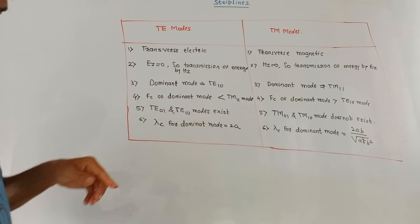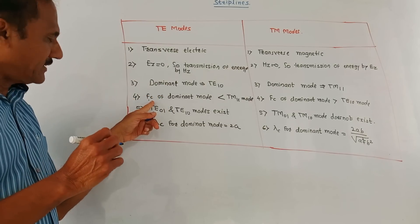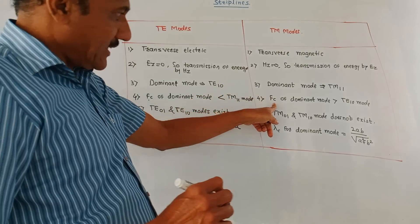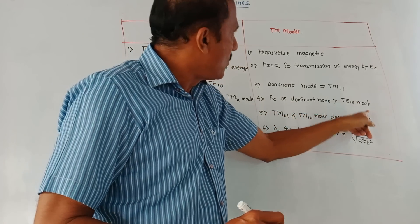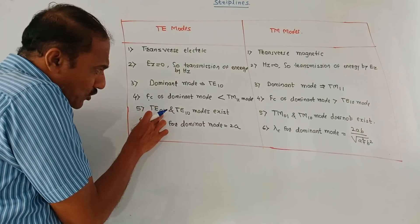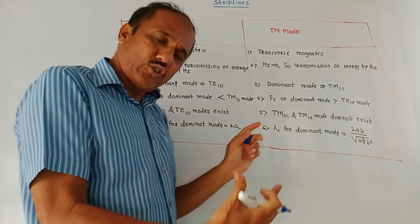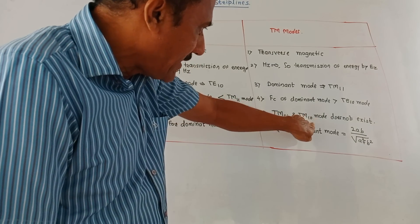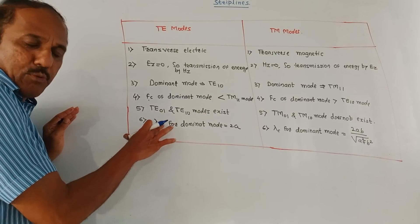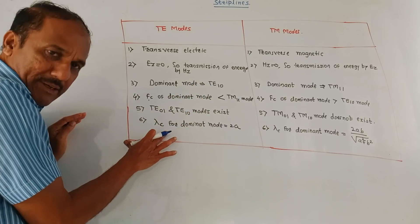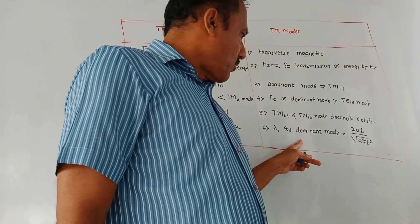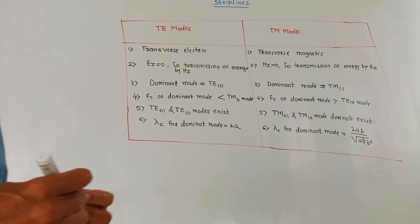Then dominant mode is TE10 and in this case dominant mode is TM11 mode. Then cutoff frequency, FC stands for cutoff frequency. Cutoff frequency of dominant mode is less than TM11 mode, whereas cutoff frequency of dominant mode is greater than TE10 mode for TM modes. Then important comparison: TE01 and TE10 modes exist, whereas in case of TM, TM01 and TM10 mode does not exist. Then cutoff wavelength, that is lambda c for the dominant mode, we know that dominant mode is TE10 mode. So lambda c cutoff wavelength for dominant mode is given by 2 times a, and for TM modes it is given by 2ab upon square root of a square plus b square.